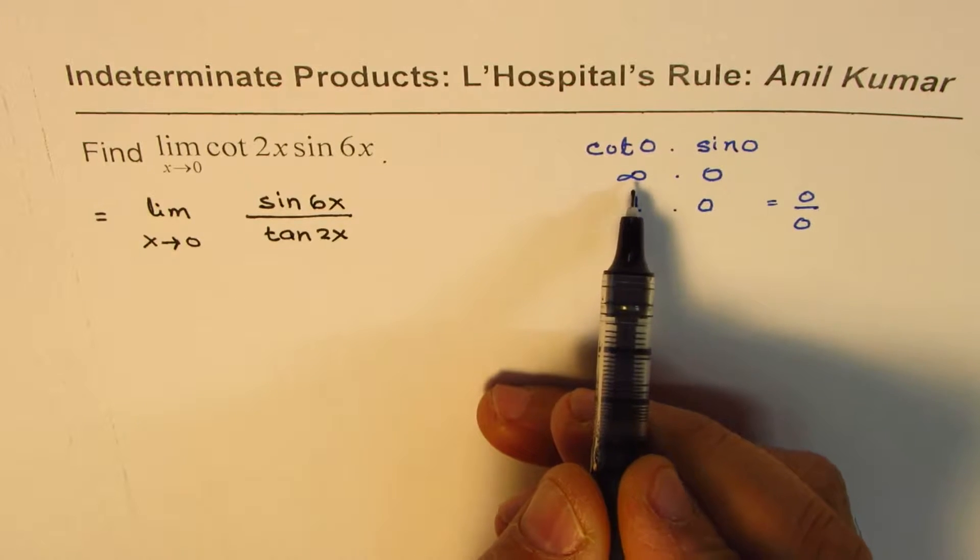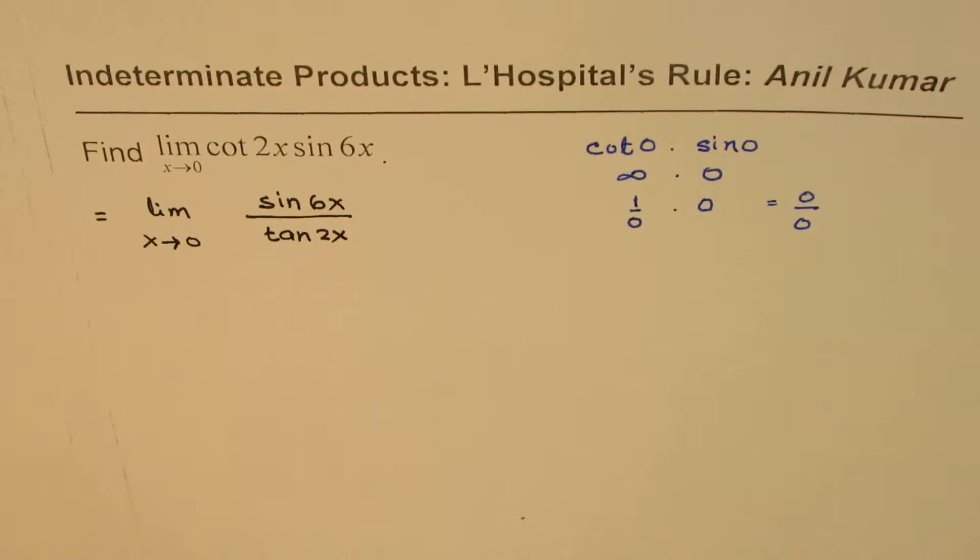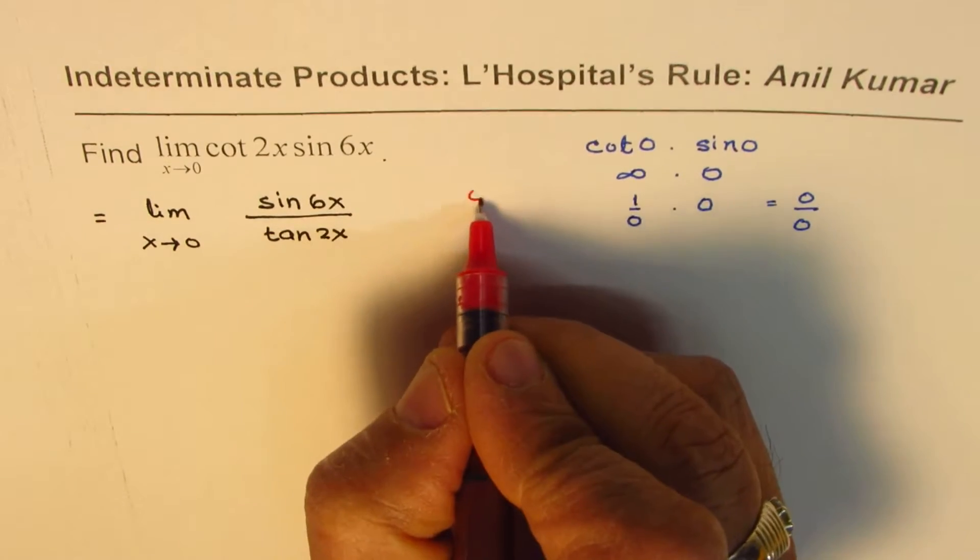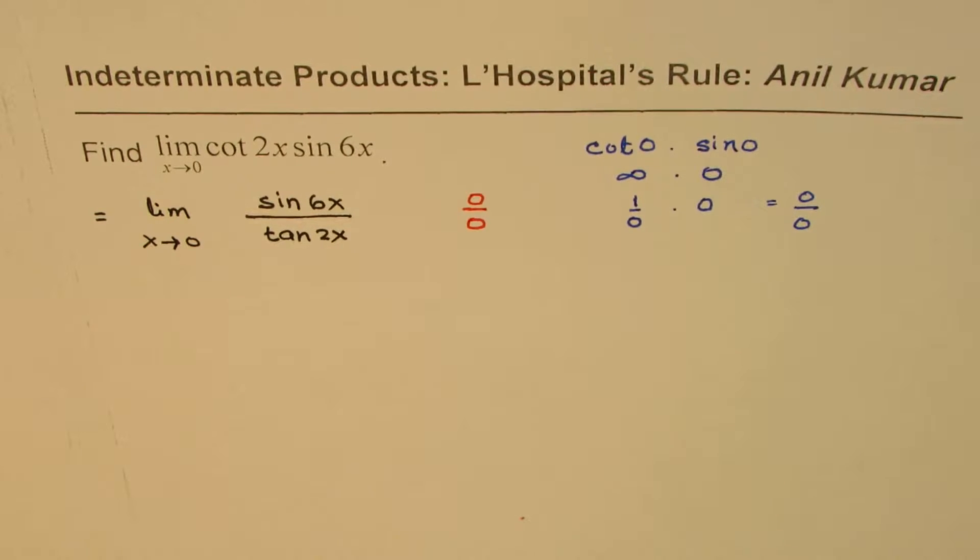So this, which was resulting into infinity, now will result into 0 in the denominator. So what we have here now is a form 0 over 0. Do you see that? So that is indeterminate form.